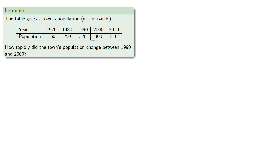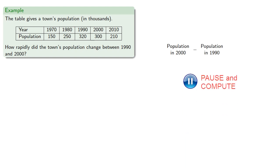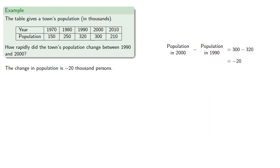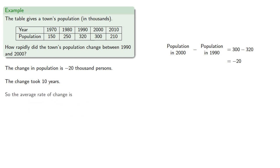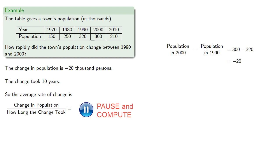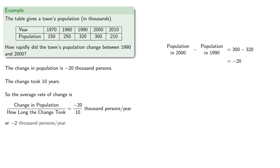The change in population is the end population in 2000 minus the beginning population in 1990. The change took 10 years, and so the average rate of change will be the change in population divided by how long the change took, and we can simplify the numerical part while leaving the units as a quotient.